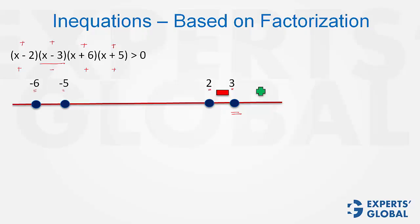Now, between 2 and negative 5, in this range, what would happen is even x-2 will become negative. So we will have two negative terms and two positive terms.